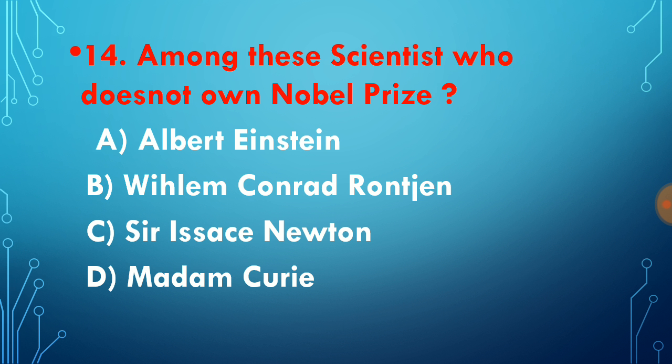Sir Isaac Newton did not win Nobel Prize. Albert Einstein won Nobel Prize for E = mc^2. Wilhelm Conrad Rontgen won Nobel Prize for discovery of X-rays. Madame Curie won in the sector of physics as well as chemistry for the discovery of radium. Nobel Prize started in 1901, and Sir Isaac Newton died in 1727, so Sir Isaac Newton did not receive the Nobel Prize.